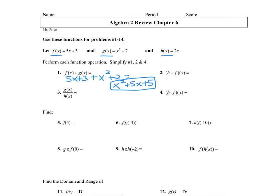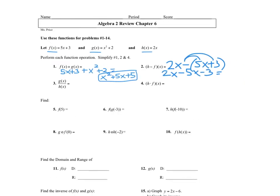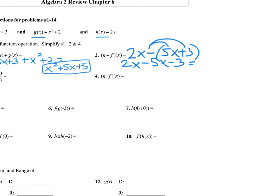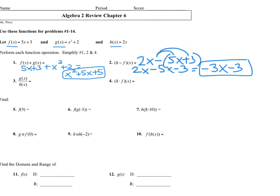Number two, you're going to take h of x, which is 2x, and subtract f of x. Now be careful here — f of x has two parts to it, so you have to subtract both parts. Take this minus sign and distribute it. You end up getting 2x minus 5x minus 3, and then combine your like terms. 2x minus 5x is negative 3x minus 3, so that would be the simplified form.